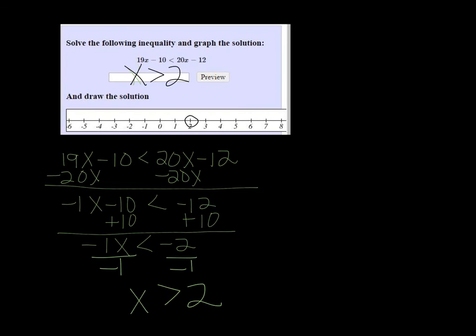And then to plot it, we want an open dot at 2 and an arrow going to the right to indicate that the numbers are going up.